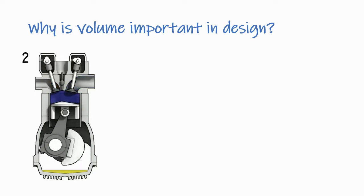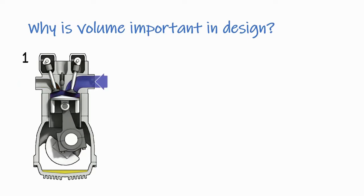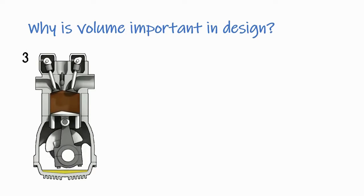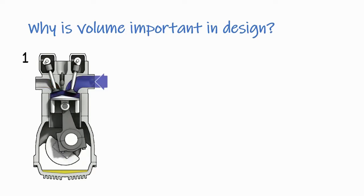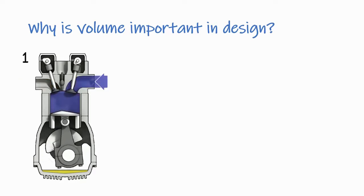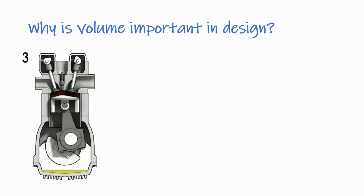We often hear engines described in terms of volume. A car's engine might be described in liters, as in a 6.2 liter V8 engine. Smaller engines, like those found on lawnmowers or motorcycles, are also described in terms of volume, but might use the units cubic centimeters instead, or cc's for short.